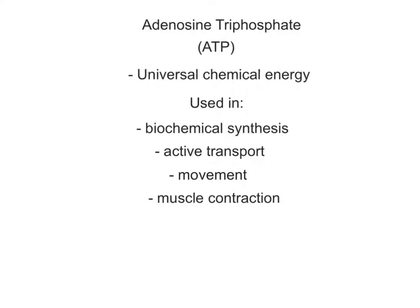The final organic molecule that we'll discuss in this unit is adenosine triphosphate, more commonly known as ATP. ATP is the universal form of chemical energy used by cells to carry out energy-demanding cellular activities, such as protein or hormone synthesis, active transport of chemicals across cell membranes, movement of cells and cellular structures like cilia, and muscle contraction.